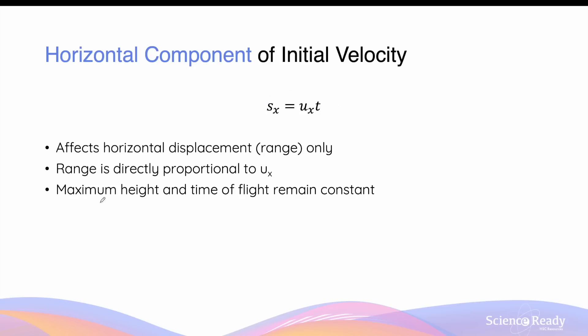It's important to understand that when we are only changing the horizontal component of initial velocity — that is, if the vertical component remains constant — the maximum height of the object and the time it spends in projectile motion will remain unchanged. Only the range of the motion is affected.